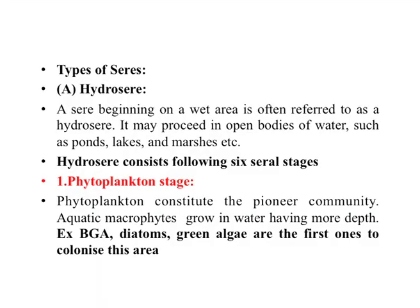Hydrosere begins with a wet area of water and may proceed through open bodies of water such as ponds, lakes, and marshes. Hydrosere consists of six stages: phytoplankton stage, submerged stage, floating stage, reed swamp stage, sedge meadow stage, and the climax forest stage. According to the sere, the pioneer stage starts with zooplanktons and phytoplanktons, and the climax stage is the woodland stage.